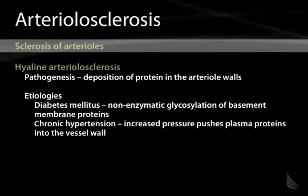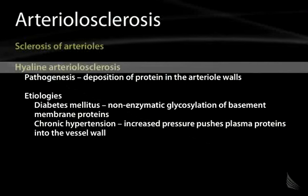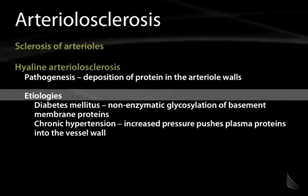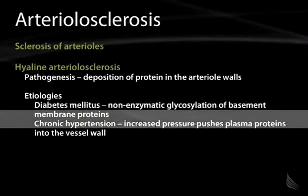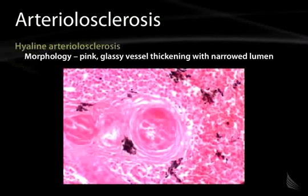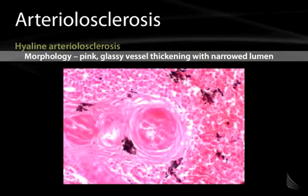Arteriolosclerosis is sclerosis of the arterioles, including hyaline arteriolosclerosis, which is deposition of protein in the arterial walls. Etiologies include diabetes mellitus, where there is non-enzymatic glycosylation of basement membrane proteins, and chronic hypertension, where increased pressure pushes plasma proteins into the vessel wall. This leaves a pink, glassy vessel thickening with a narrow lumen, as shown here.